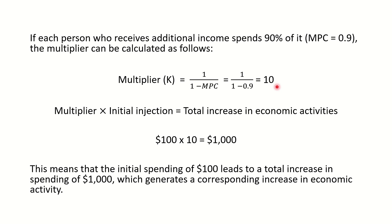Now we can find what is the total increase in economic activities because of the $100. The equation is: multiplier multiplied by initial injection equals total increase in economic activities. In this case, the initial injection is $100 and the multiplier is 10, so the total increase in economic activities is $1000. Initially the person spends only $100, but ultimately that created $1000 of income in the economy. This means that the initial spending of $100 leads to a total increase in spending of $1000, which generates a corresponding increase in economic activity.